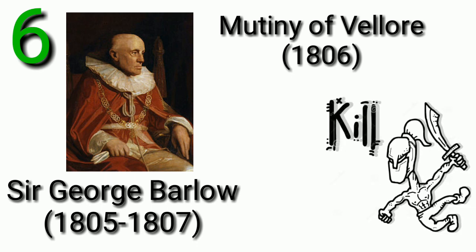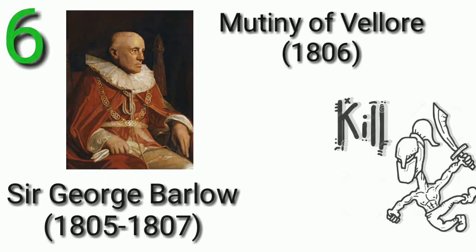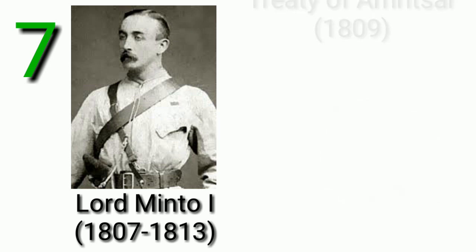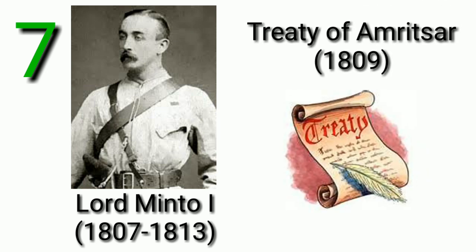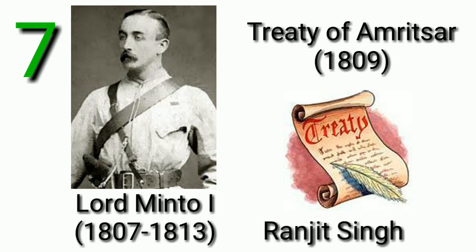Indian soldiers and British soldiers clashed in the Vellore Mutiny in the year 1806. Then Lord Minto I. Lord Minto I concluded the Treaty of Amritsar in 1809 with Maharaja Ranjit Singh, before the Anglo-Sikh Wars I and II.